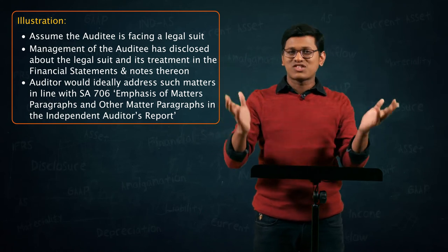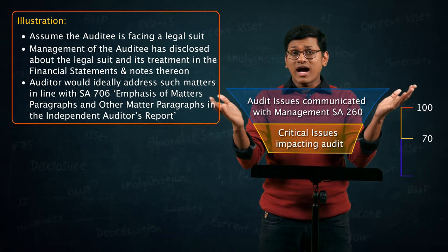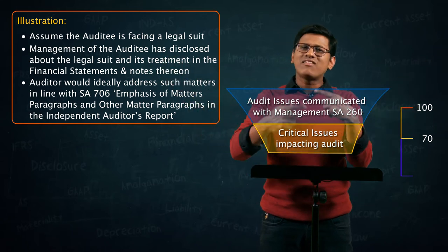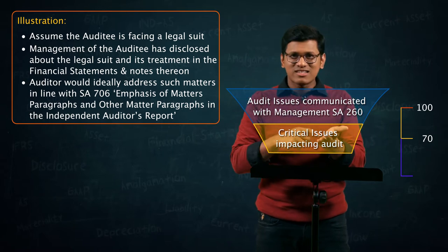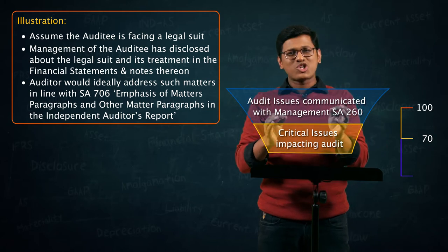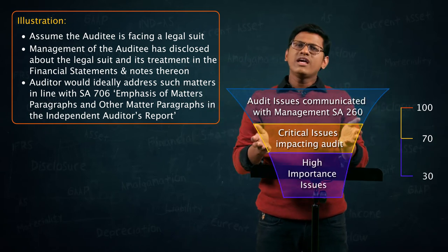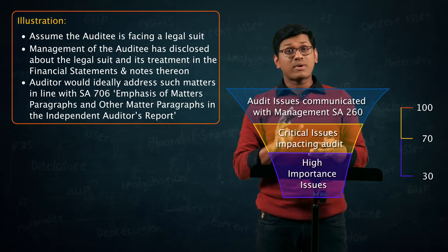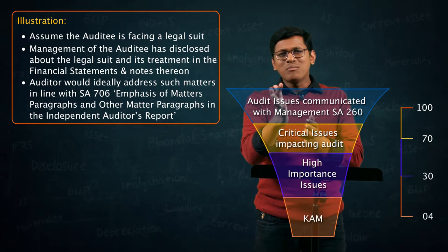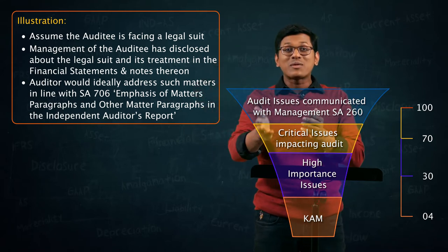What SA 701 basically asks us to do is: from all the points communicated, you will filter a few. Out of 100, maybe 70 have an impact on your audit — requiring additional evidence or specific audit procedures. Out of those 70, some 20 might be reasonably important enough to assess their impact on the audit report. Out of that, there might be very few — maybe 3, 4, or 5 — which are super critical. You call these key audit matters.